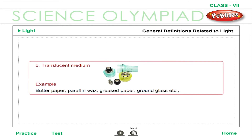Translucent medium: substances which allow only a part of the light to pass through them, and through which objects cannot be distinctly seen. Examples include butter paper, paraffin wax, greased paper, and ground glass.